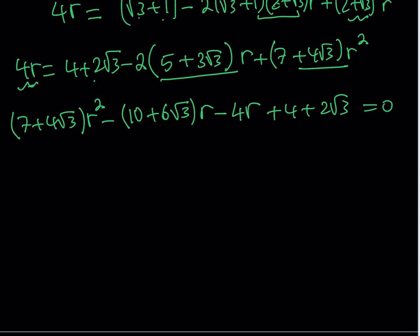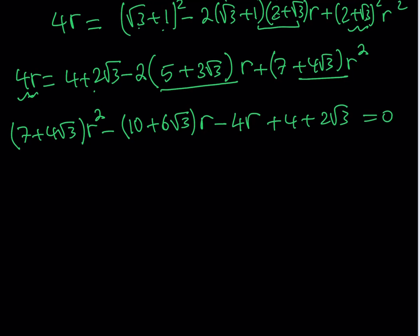What am I getting from here? Well, I can arrange this a little bit more. 7 plus 4 root 3, multiply by r squared. Now, I'm subtracting 4 from this, so that should look like 10 minus 4, which is 6. Then I get 6 plus 6 root 3 times r, plus 4 plus 2 root 3. A lot of radicals, right? But this can be solved, obviously, and we're going to solve it with the quadratic formula.